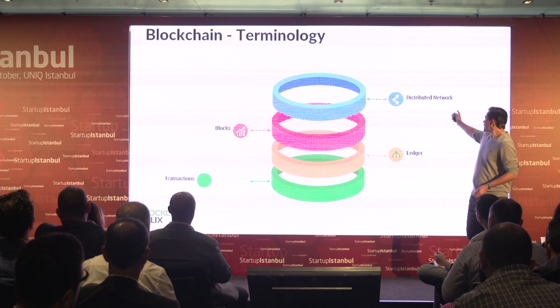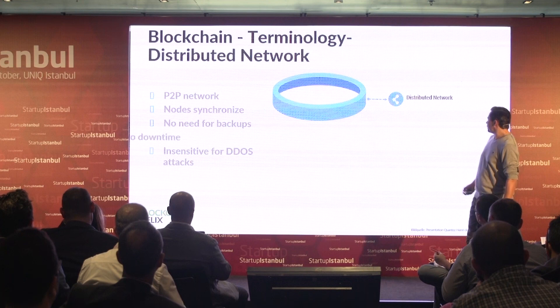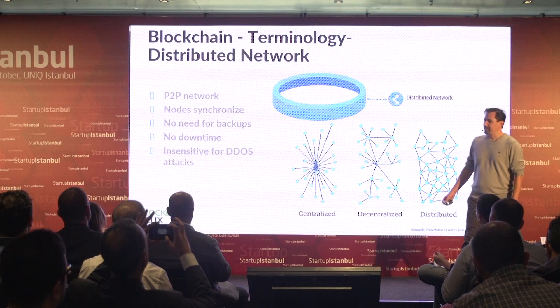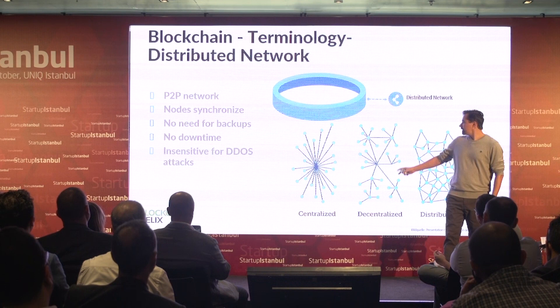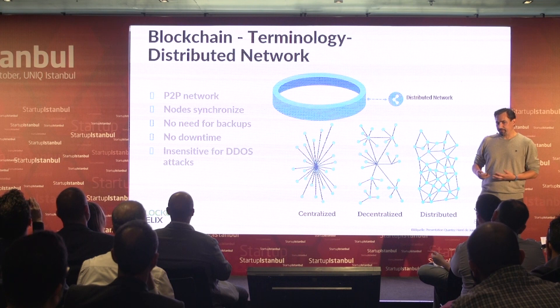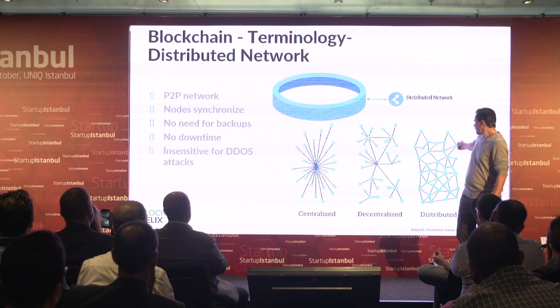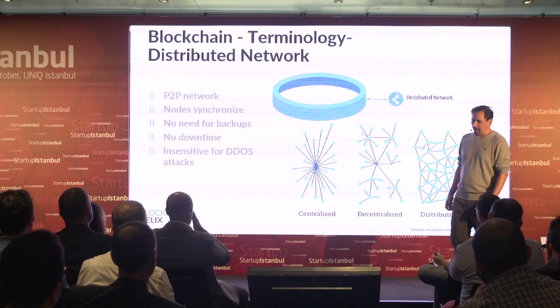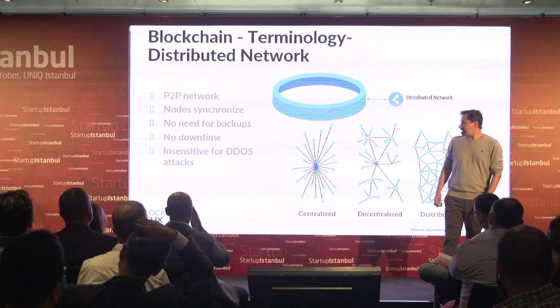To get an idea: we have the distributed network, the ledgers, transactions, and blocks. The network itself is called cyber resilient - you do not have a single point of failure. The system is completely distributed, the nodes synchronize, and we do not need any backup because all the nodes have all the information on them. If one fails and goes down, it simply doesn't matter. The main idea is that it's insensitive to denial-of-service attacks.